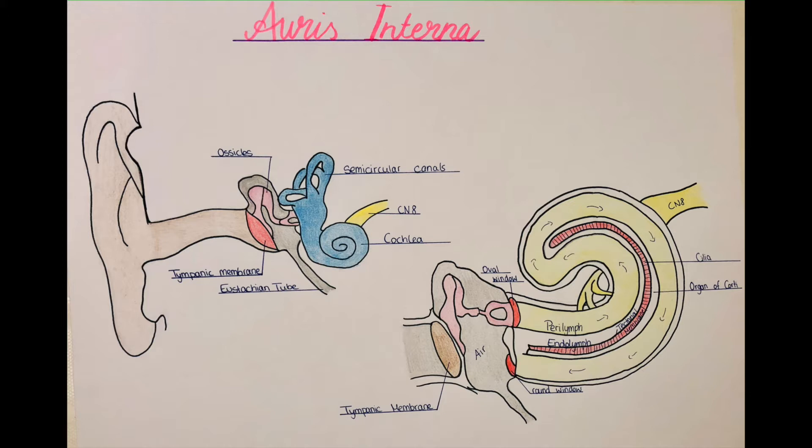It's the place for the vestibulocochlear organs. We will talk about both of them separately and you can see them here marked in blue. The semicircular canals on top are part of the labyrinth of the vestibular part and the cochlea is the part which is responsible for the conversion of sound pressure patterns into electrochemical impulses.